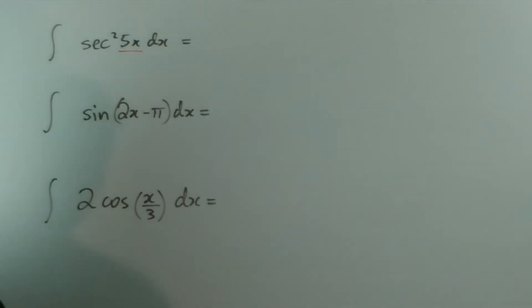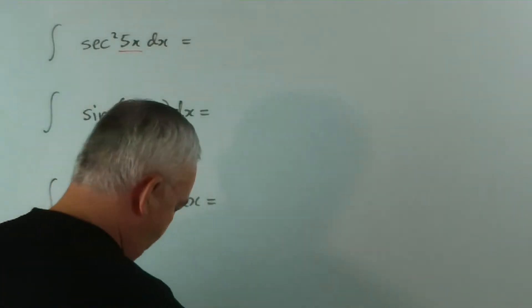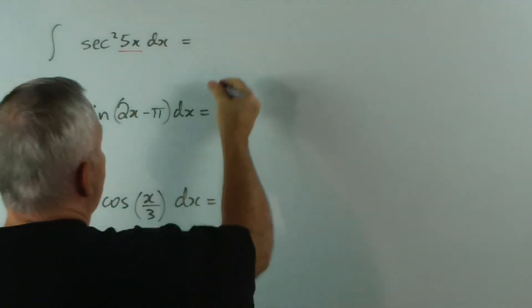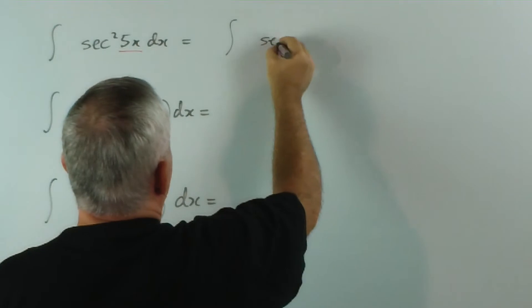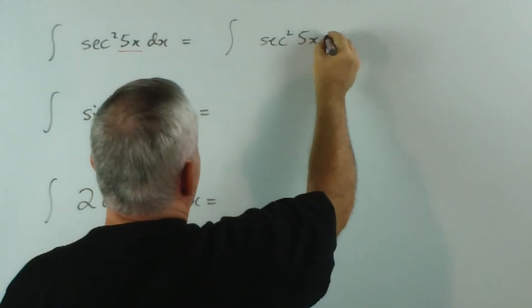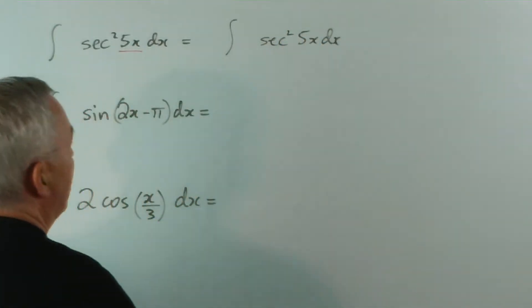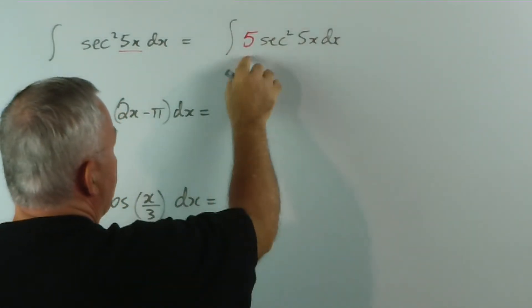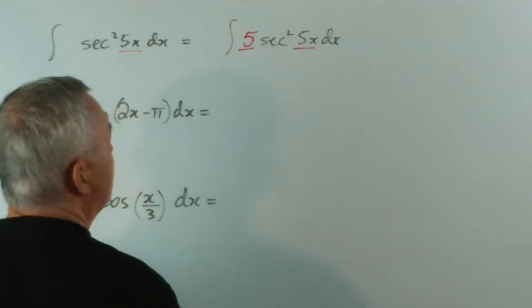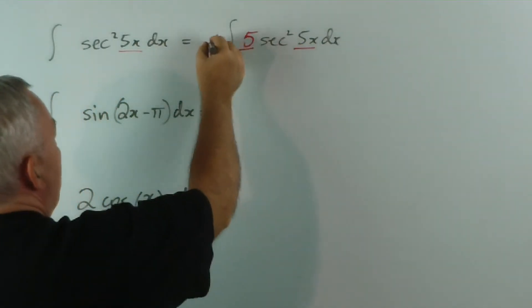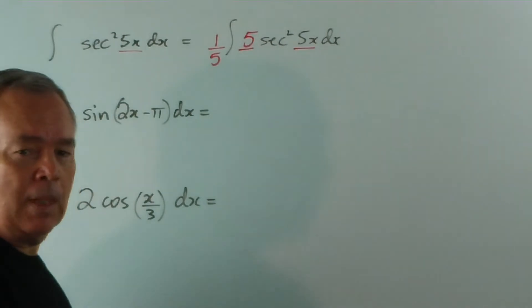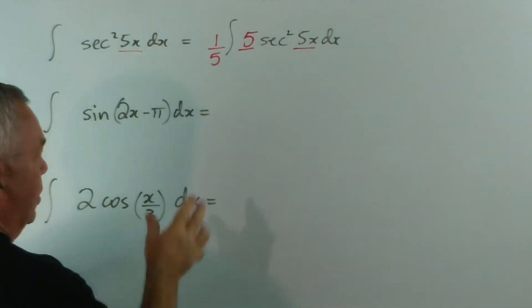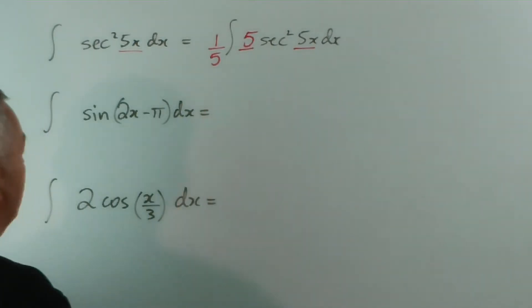So what we would do, I will, in fact, write it again, rather than write over the top of it. We have the integral of sec squared 5x dx. And what we need to do is to produce a 5 here, so that that is the derivative of that. And to compensate, we put 1 fifth out the front. And then integrating this sec squared will give us tan. We'll come back to that in a moment. I'm looking at the patterns overall.